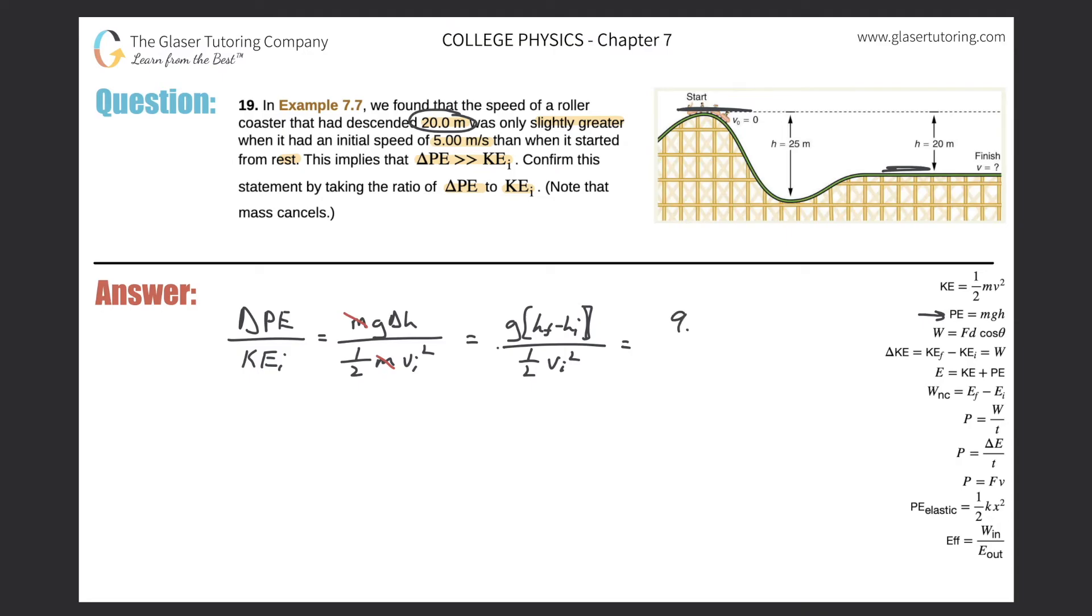So we're going to plug in now 9.8 times the value of 20, because that's how much it changes by, divided by one half times the initial velocity, and they said it was five meters per second. So that's five squared.